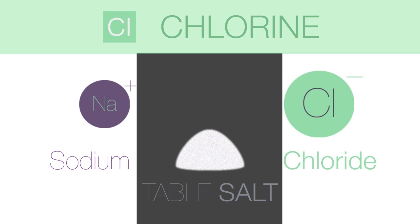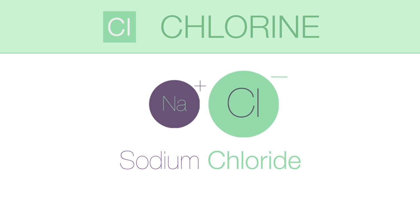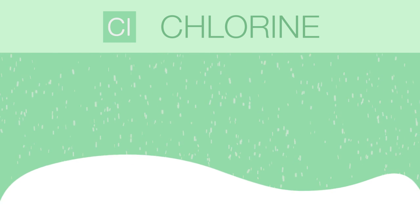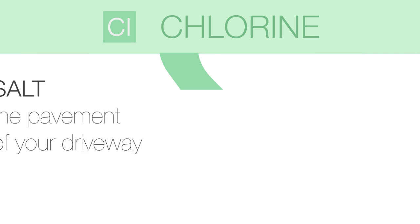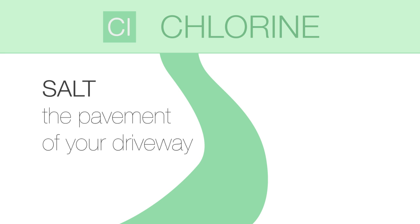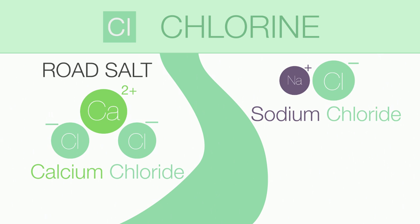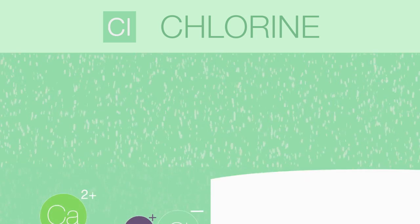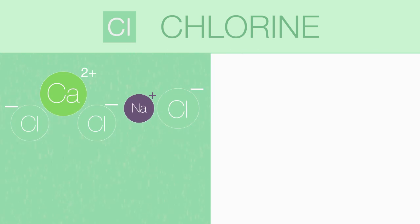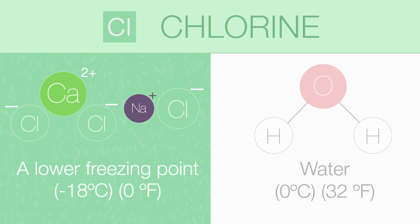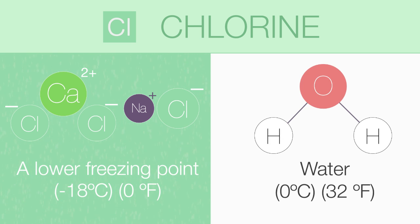Regular table salt is sodium chloride. As you know very well, it is a flavouring agent and enhances the taste of food. If you live in a cold climate, you may have had to salt the pavement of your driveway prior to an anticipated snowstorm. Road salt is a mixture of sodium chloride and calcium chloride. The sodium and calcium chloride solution that results when the snow starts to fall has a lower freezing point than that of water, so a non-icy surface results, even at extremely low temperatures.